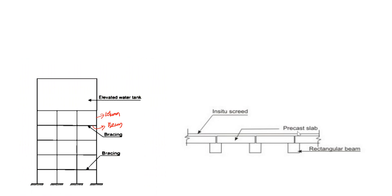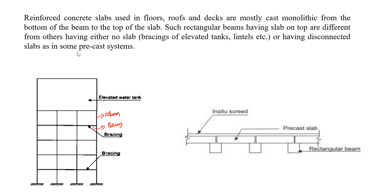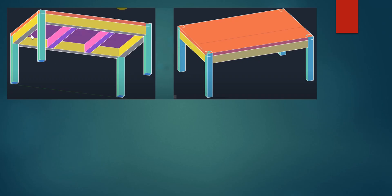Similarly, if you take a precast slab, the rectangular beam is placed first and then the precast slab is simply laid over it. These two units act differently — they are not monolithic. In contrast, reinforced concrete slabs used in floors, roofs, and decks are mostly cast monolithic from the bottom of the beam to the top of the slab. Such rectangular beams with slabs on top form a single unit — this is called a flange section.